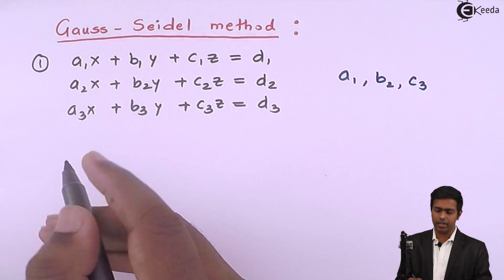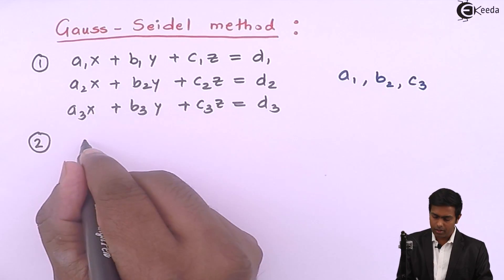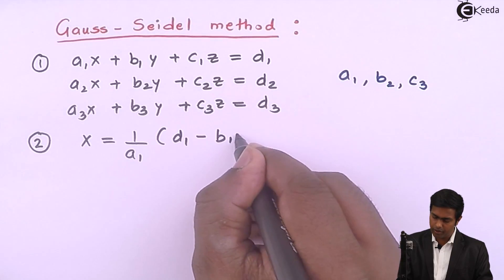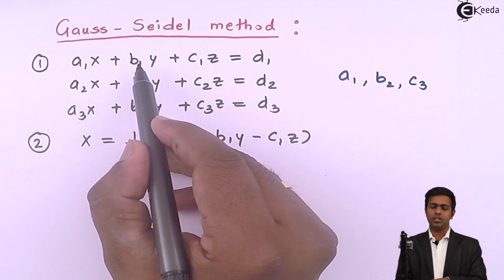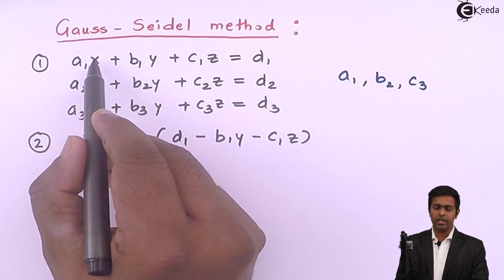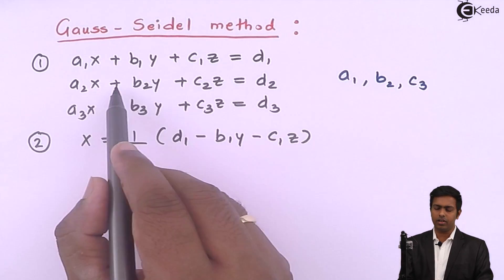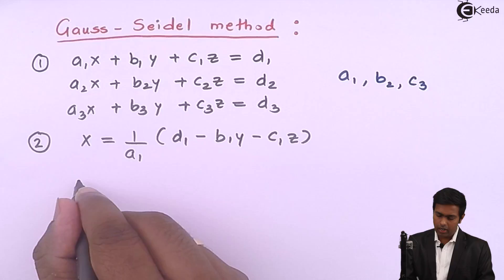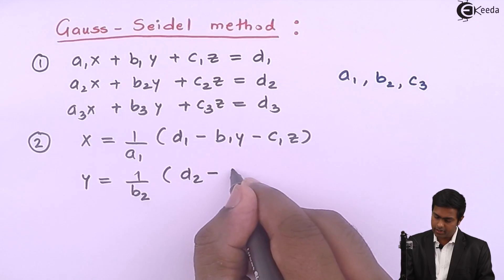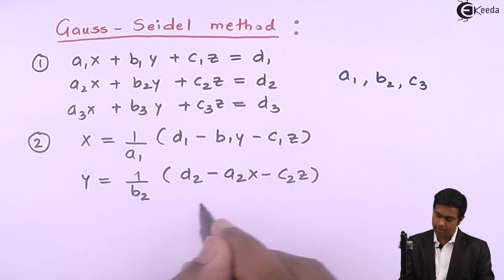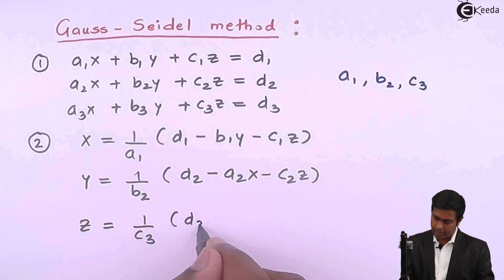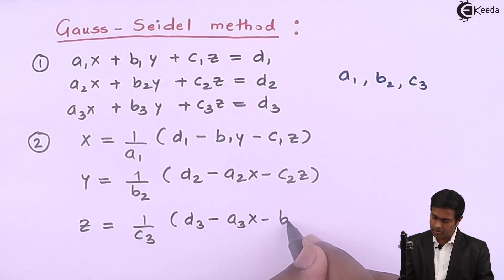Here is how we represent them: x = (1/a1)(d1 − b1y − c1z), taking b1y and c1z to the other side as negatives and dividing by a1. From the second equation: y = (1/b2)(d2 − a2x − c2z), and z = (1/c3)(d3 − a3x − b3y). This gives us expressions for x, y, and z.